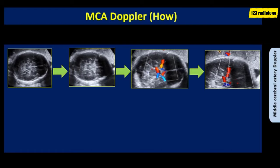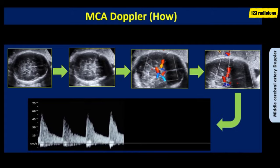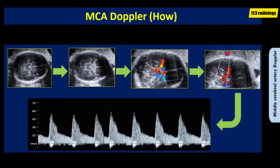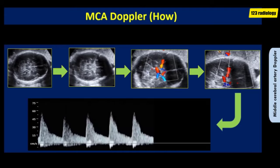To perform Doppler study of the middle cerebral artery, obtain a transverse view of the fetal brain at the level of the biparietal diameter, then move the transducer towards the base of the fetal skull. Activate color Doppler imaging — the circle of Willis is easily visualized, with the MCA seen as a short vessel running in an anterolateral direction. Assess the MCA closer to the transducer. Align the MCA flow direction with the Doppler beam and place a small sample volume 2 mm from the MCA origin. Optimize the spectral Doppler baseline and PRF to get a large waveform.